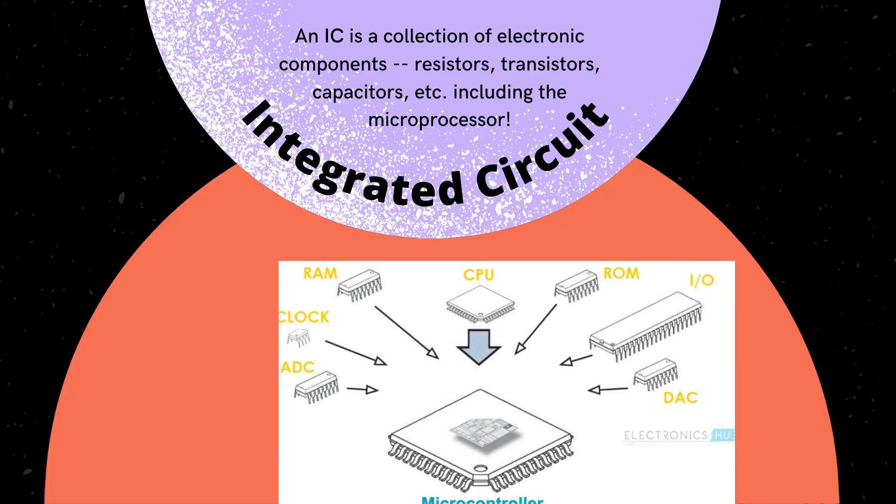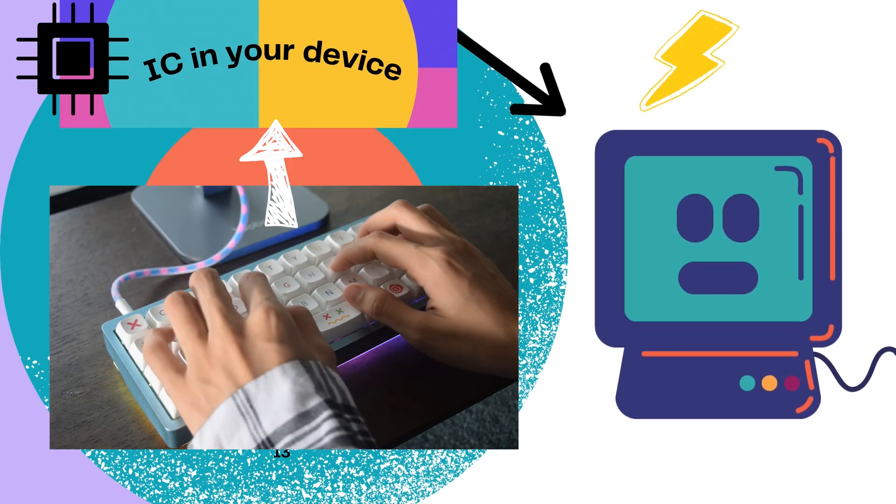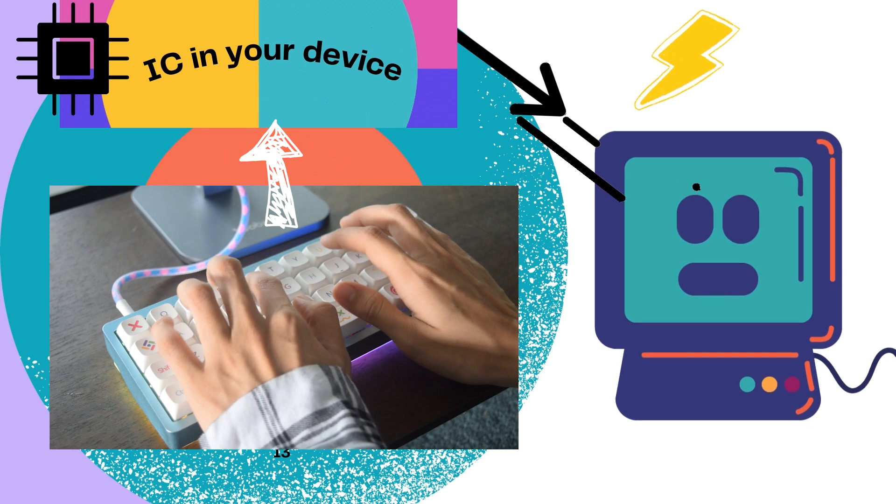An IC is a collection of electronic components - resistors, transistors, capacitors, including the microprocessor - all stuffed into one tiny chip. This chip is the core to how your machine or system is able to compute programmatically.